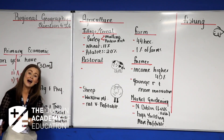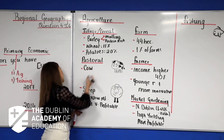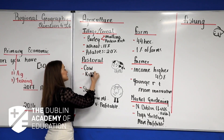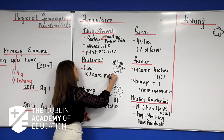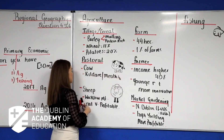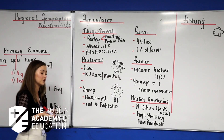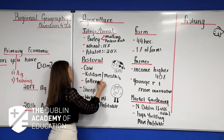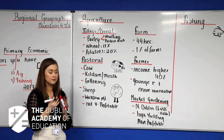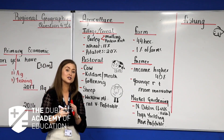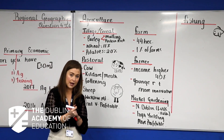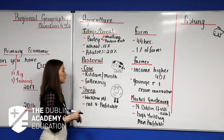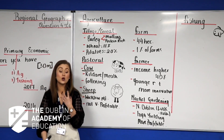Cattle are generally grazed within County Kildare and County Meath. Many cattle are sent for fattening on the rich, luscious grasslands of County Kildare and County Meath prior to being sent to the slaughterhouse.